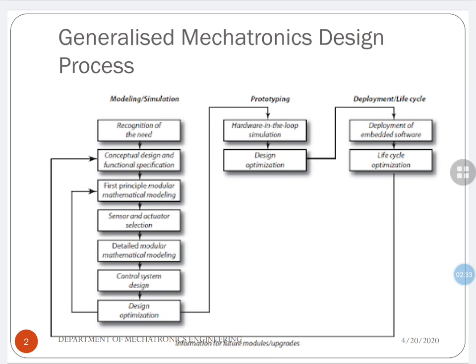The third step is first-principle modeling or mathematical modeling. Modeling is basically developing a software prototype of the system. You should decide what the input parameters are, what the output parameters are, what the relationship between input and output parameters is, and how to use those relationships in the model.